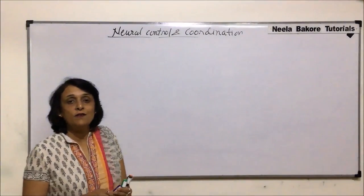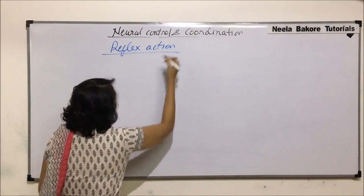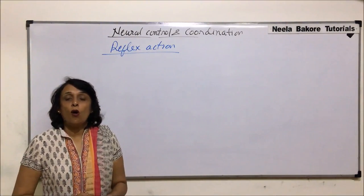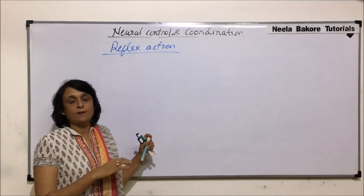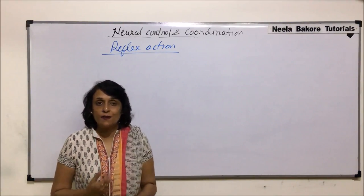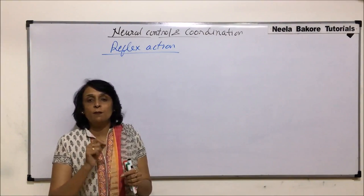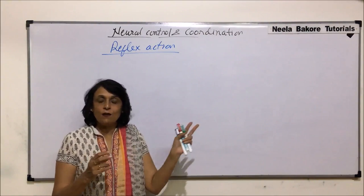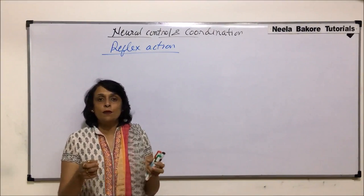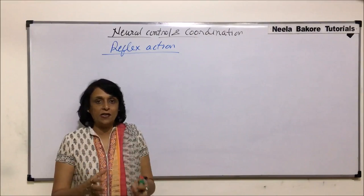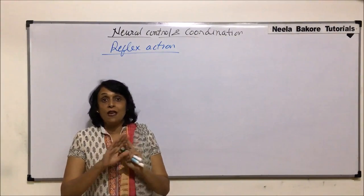In this section we'll talk about reflex action. Reflex actions are actually spontaneous, automatic, uncontrolled responses to certain stimuli. Before we discuss the specifics, let's take some examples. If we unknowingly get pricked by something, our hand suddenly moves away from that needle or thorn. If we accidentally touch a vessel which is extremely hot, as soon as we touch it and feel the heat, we immediately leave it or drop it.